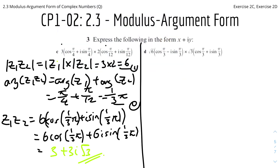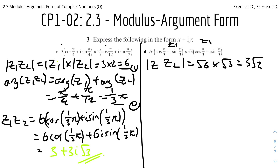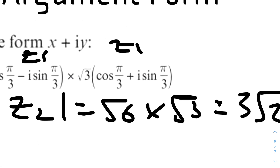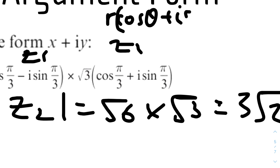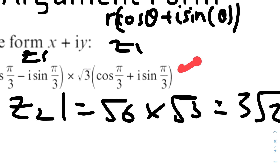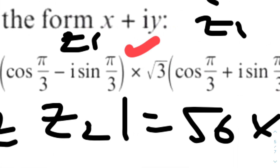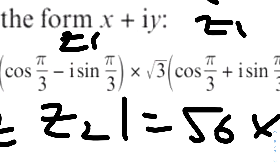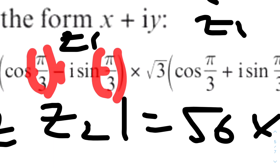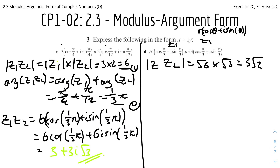For part d, setting the two factors as z₁ and z₂: |z₁z₂| = √6 × √3 = √18 = 3√2. For the argument, we have to be careful: the modulus-argument form requires r(cosθ + i sinθ). One of the terms has a negative inside, so we must bring the negative out, rewriting z₁ as √6(cos(−π/3) + i sin(−π/3)), making the argument of z₁ equal to −π/3.